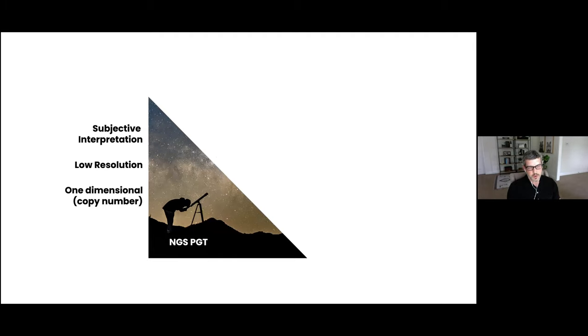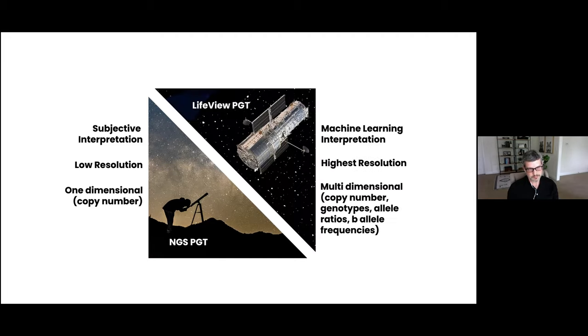With regard to the overall performance of next-gen, it's relatively subjective. People are still developing their own criteria for interpreting intermediate copy numbers. It's relatively low resolution and one-dimensional because it's limited to copy number. As I said, with LifeView PGT, we have the highest resolution available. We're using machine learning interpretation with multiple dimensions: copy number, genotypes, allele ratios, allele frequencies, for example.